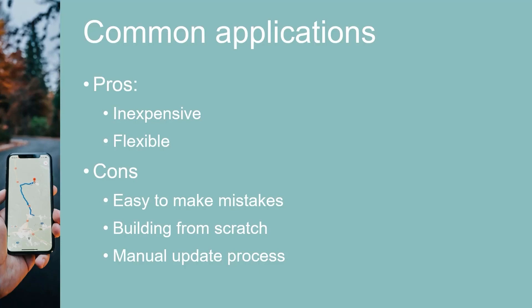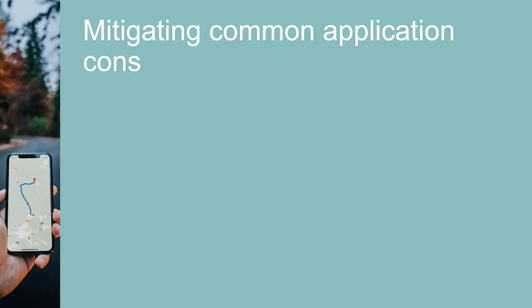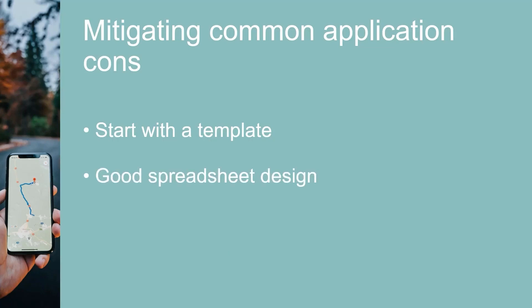You will likely have to build most of the OKR report yourself, and updating data is usually a manual process. There are a few ways to mitigate these downsides. First, you can start with a template from the internet so you're not starting from scratch — some sites offer free and inexpensive templates. Good spreadsheet design limits the chances of formula corruption and inadvertent mistakes.